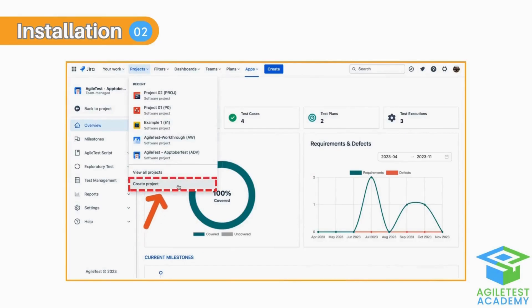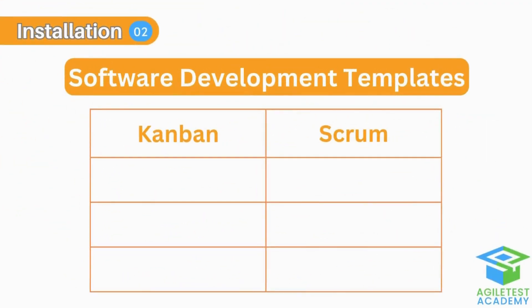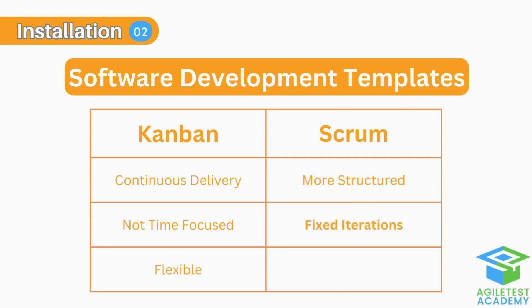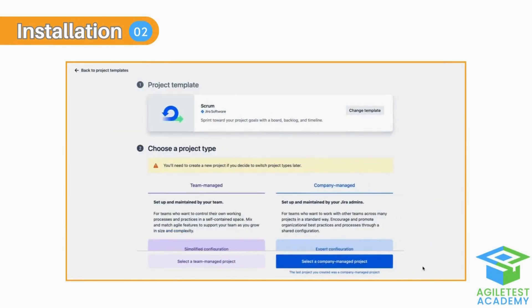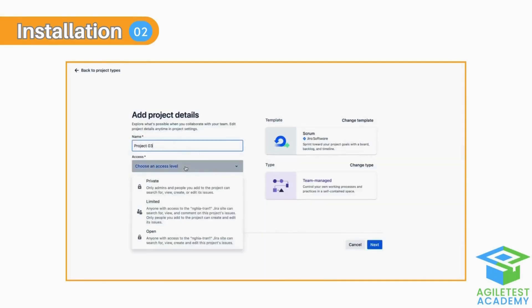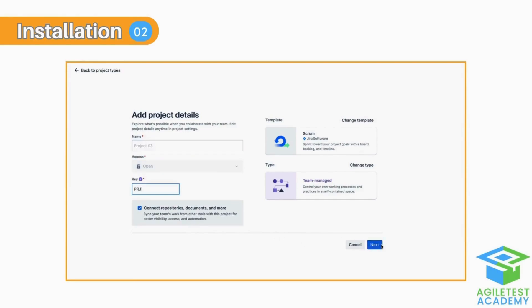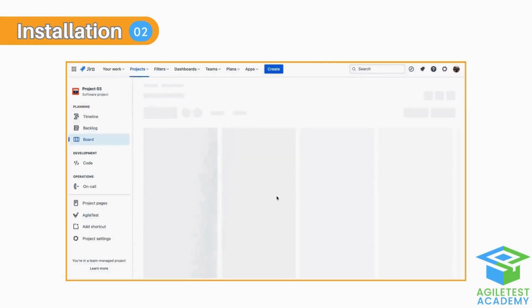Let me walk you through from the beginning. When creating a project, you are presented with these project templates. In short, Kanban is more about the continuous delivery of work, not necessarily emphasizing timed iterations, making it flexible to change priorities on the fly. On the other hand, Scrum is more structured, with defined roles and fixed iterations, focusing on delivering a shippable increment at the end of each sprint. For this video, I'm going to choose Scrum to utilize the sprint feature of the Azure Test app, since users in Kanban cannot fully utilize all of the Azure Test features such as sprints. But the good news is that users can toggle between the two templates, if and only if the project is company-managed.